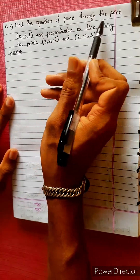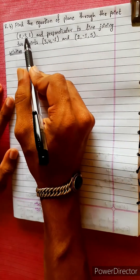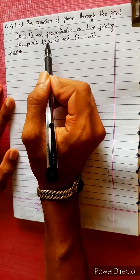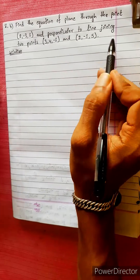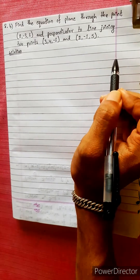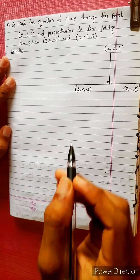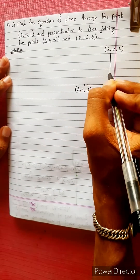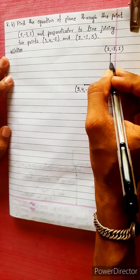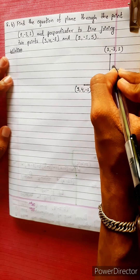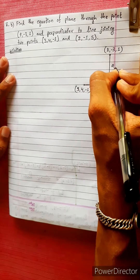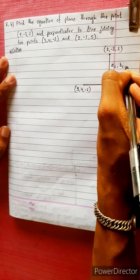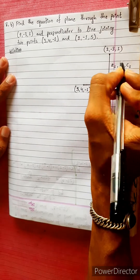Find the equation of a plane through a point, perpendicular to the line joining the given data points. We have a diagram of this. Suppose we have a direction ratio A1, B1, C1.